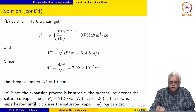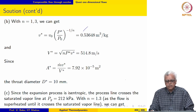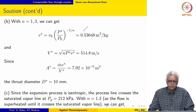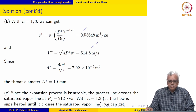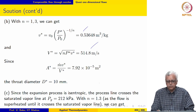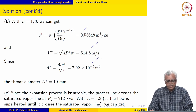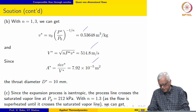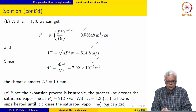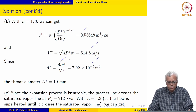With n = 1.3, we evaluate V* — assuming the flow is superheated at the throat. The velocity at the throat equals the speed of sound, and from the given mass flow rate of 0.076 kg/s, the throat area and hence the throat diameter are evaluated.